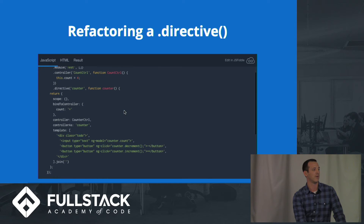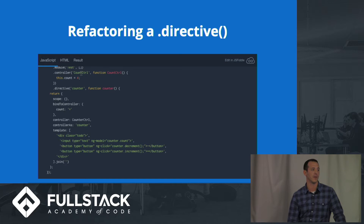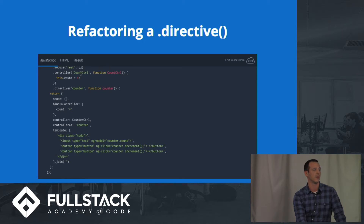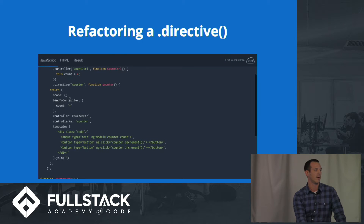It takes a count which is passed to it from its parent controller. That controller — the count controller — would probably be using a service of some sort to get that number, but for this example we're just going to use a four. And then we have our directive declaration here.